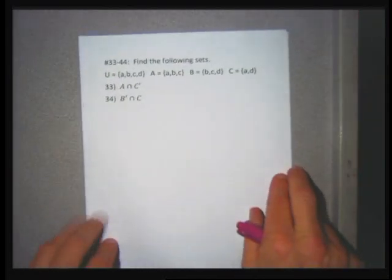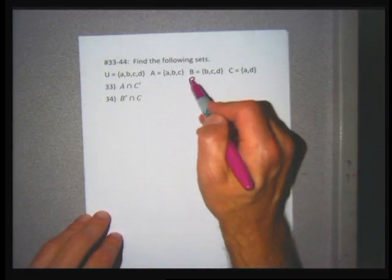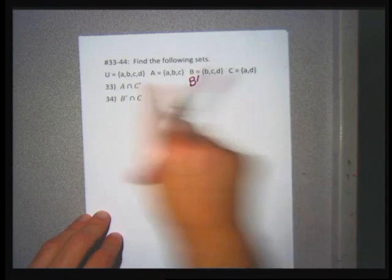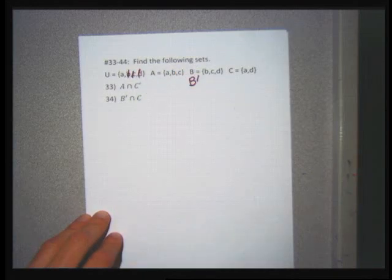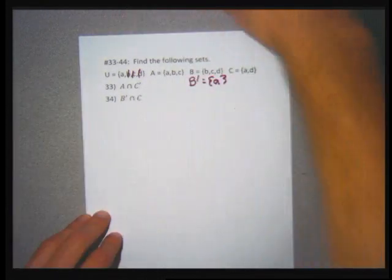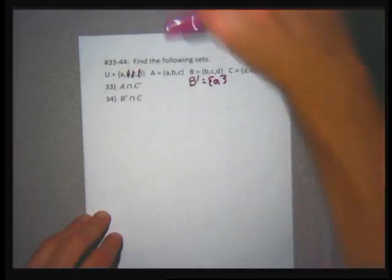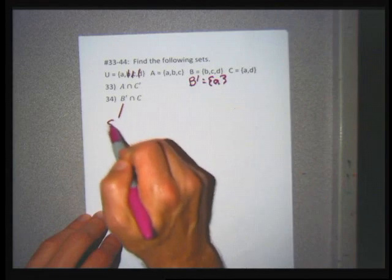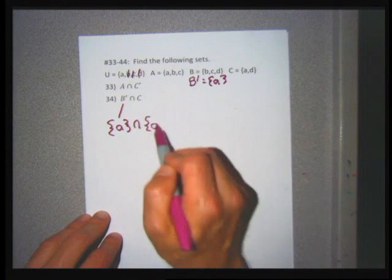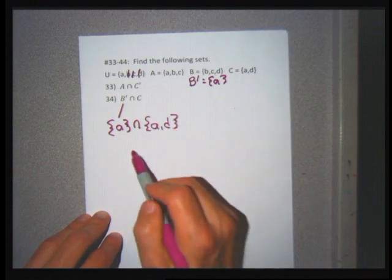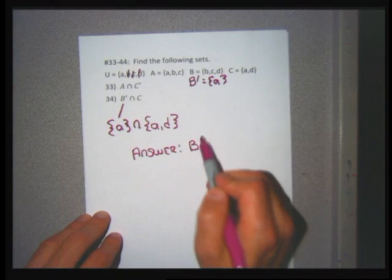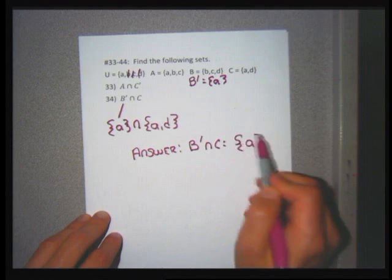Problem 34: B' intersection C. New set — B = {B, C, D}. B' = {A} after removing B, C, D from the universe. Set C = {A, D}. Intersecting {A} with {A, D}: they have A in common. So B' intersection C is the set containing just the letter A.